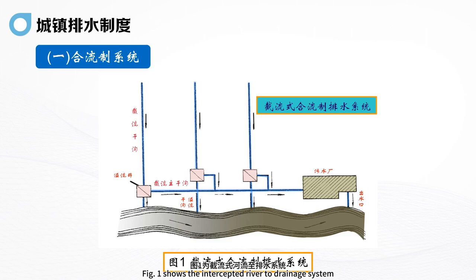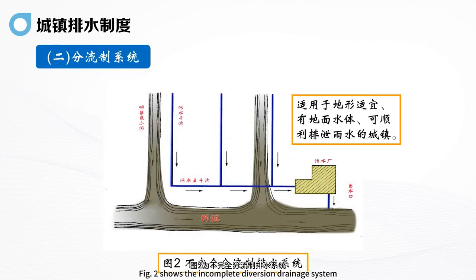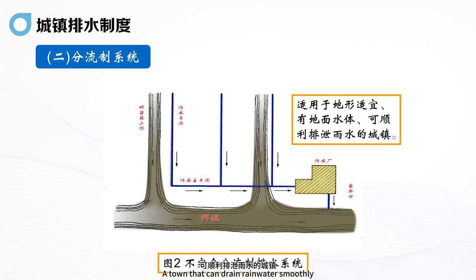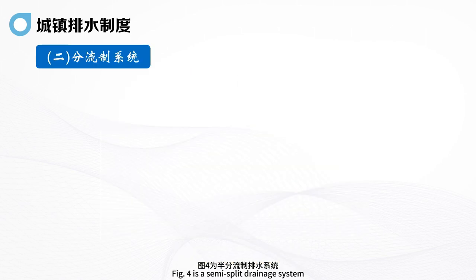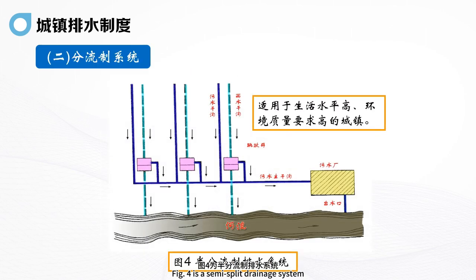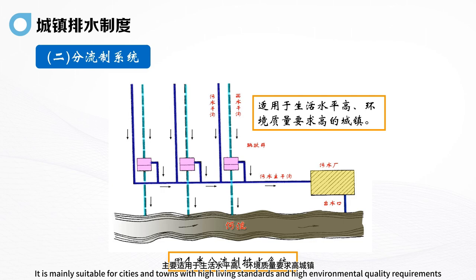Figure 1 shows the intercepted combined drainage system. Figure 2 shows the incomplete diversion drainage system, suitable for towns with favorable terrain that can drain rainwater smoothly. Figure 3 shows the complete diversion drainage system, which achieves full separation of rain and sewage. Figure 4 shows the semi-split drainage system, mainly suitable for cities and towns with high living standards and high environmental quality requirements.